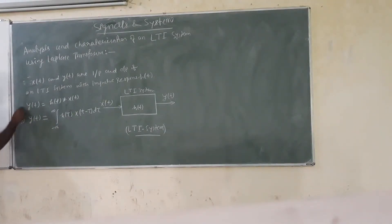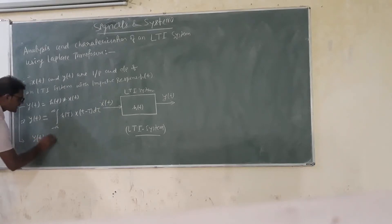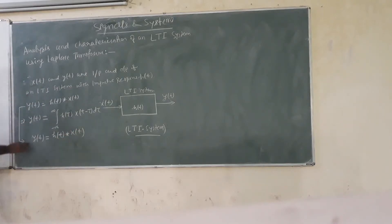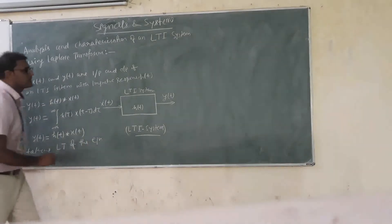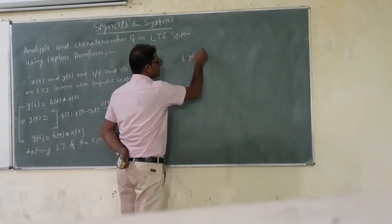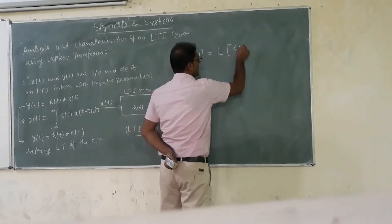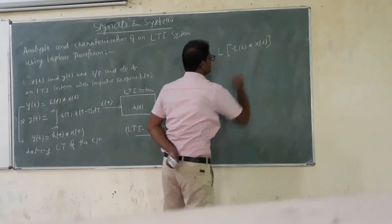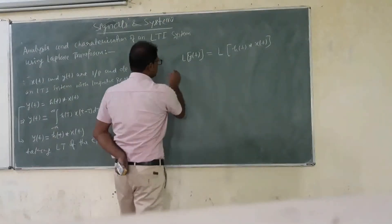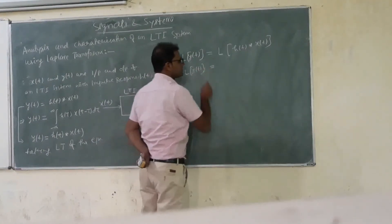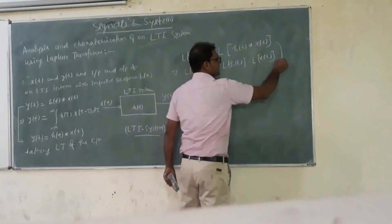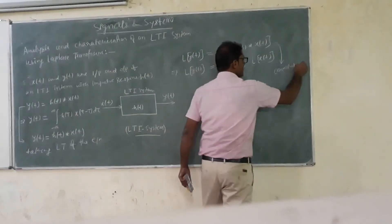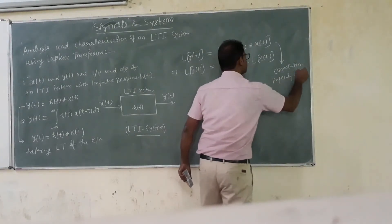We can write YT equal to HT convolved with XT. Now if we take the Laplace transform of this equation, then the Laplace transform of YT will be equal to the Laplace transform of HT multiplied by the Laplace transform of XT, using the convolution property of Laplace transform.